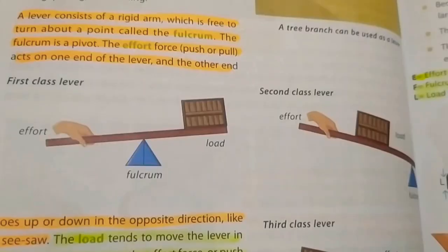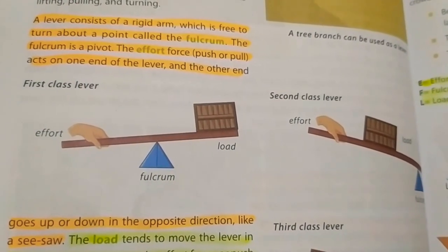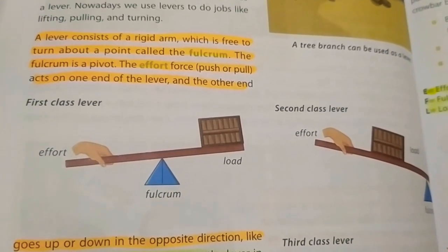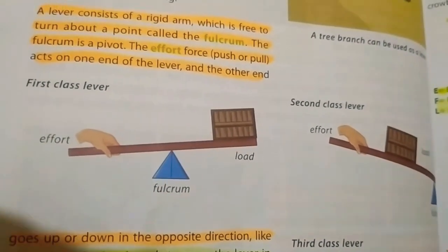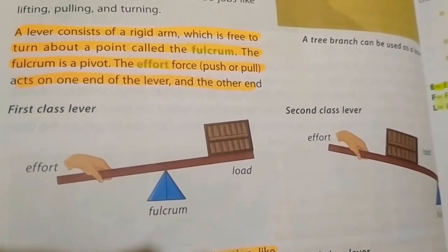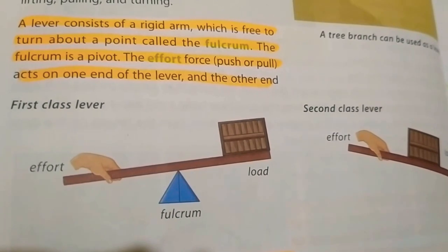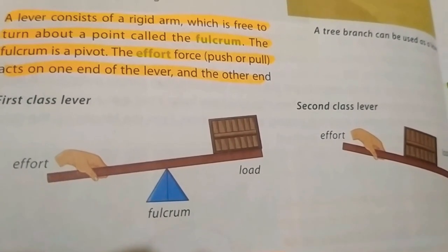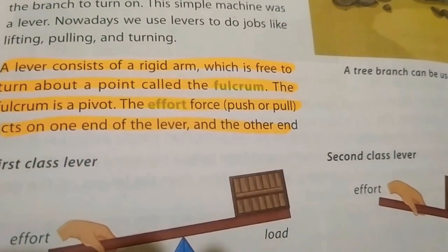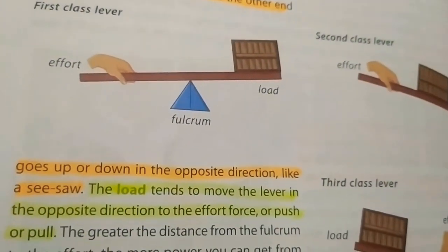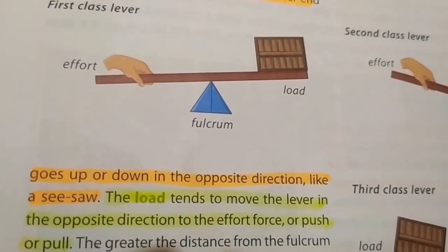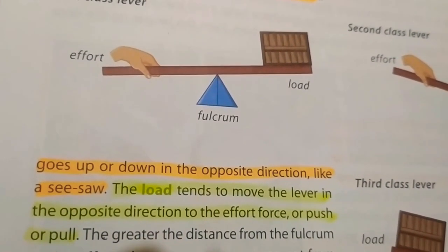Like a seesaw, technically speaking, a lever consists of a rigid arm or rigid rod which is free to turn about a point called the fulcrum. Here, this blue point is the fulcrum. The force that we are applying is called the effort, and the work done by this rod is called the load. The effort is shown with an orange highlighter, the fulcrum is also shown with an orange highlighter, and the load definition is shown with a green highlighter. The load tends to move the lever in the opposite direction to the force of push or pull.